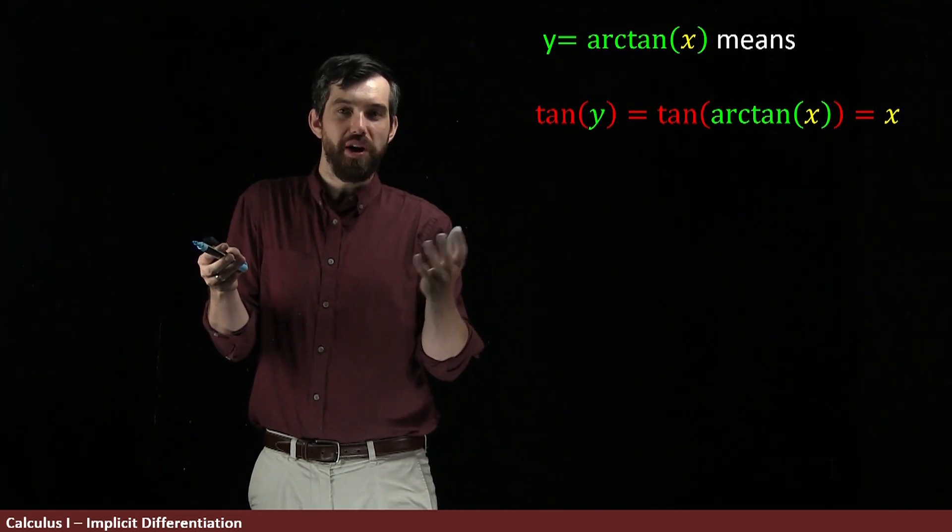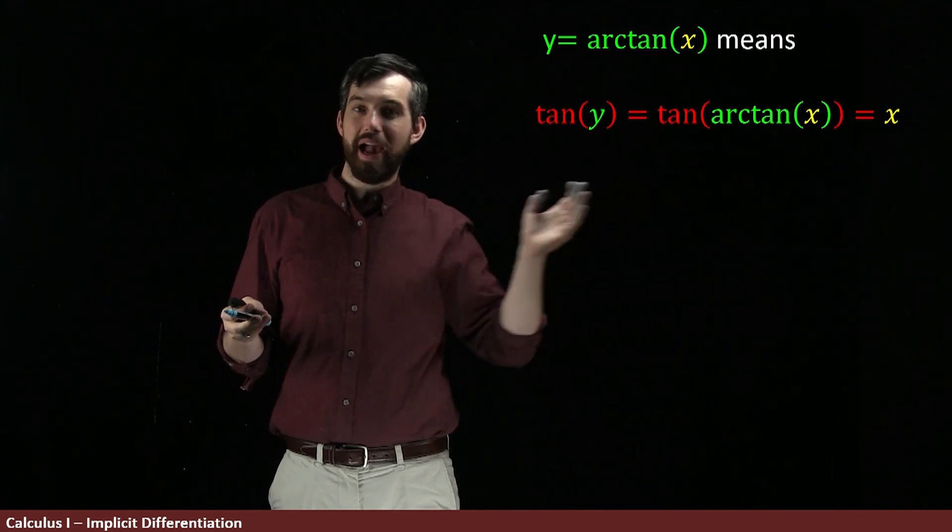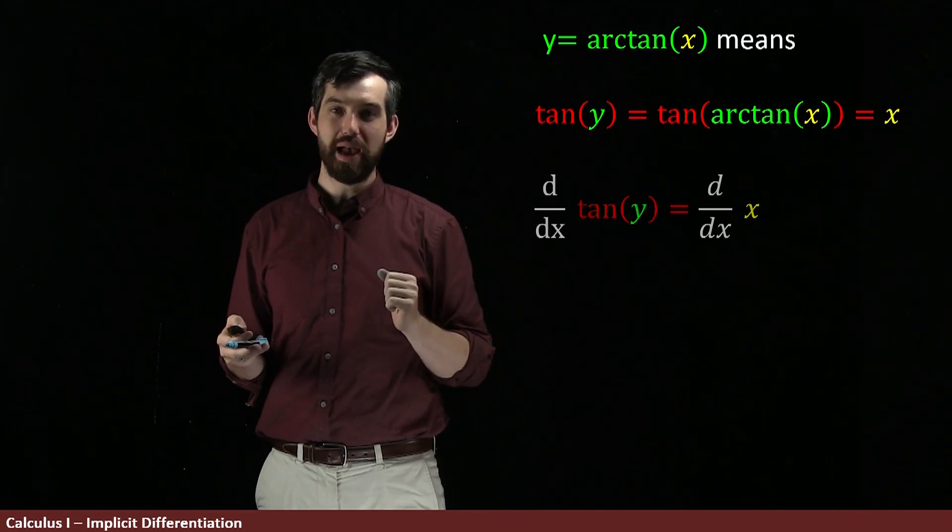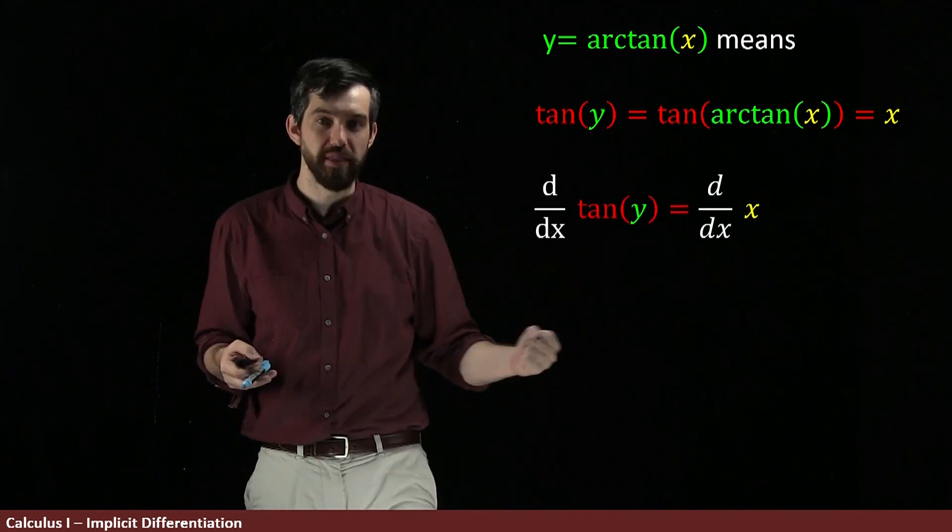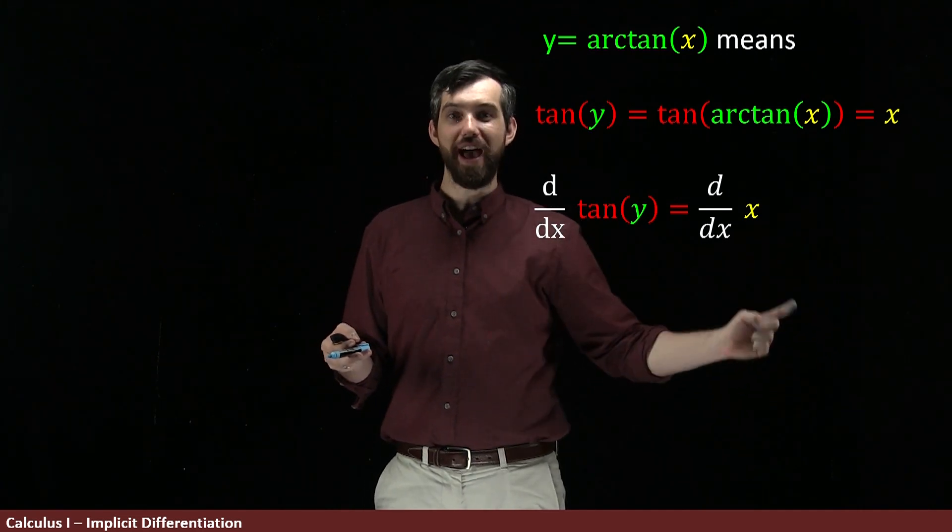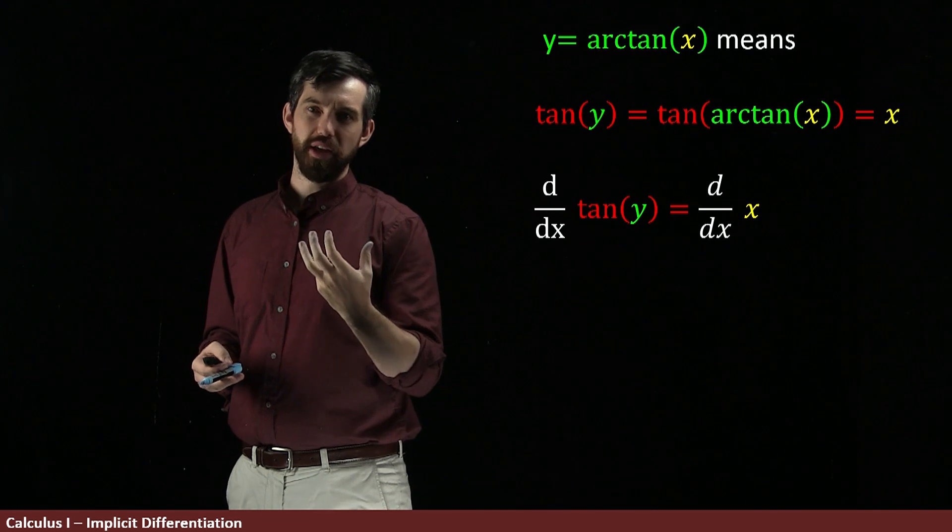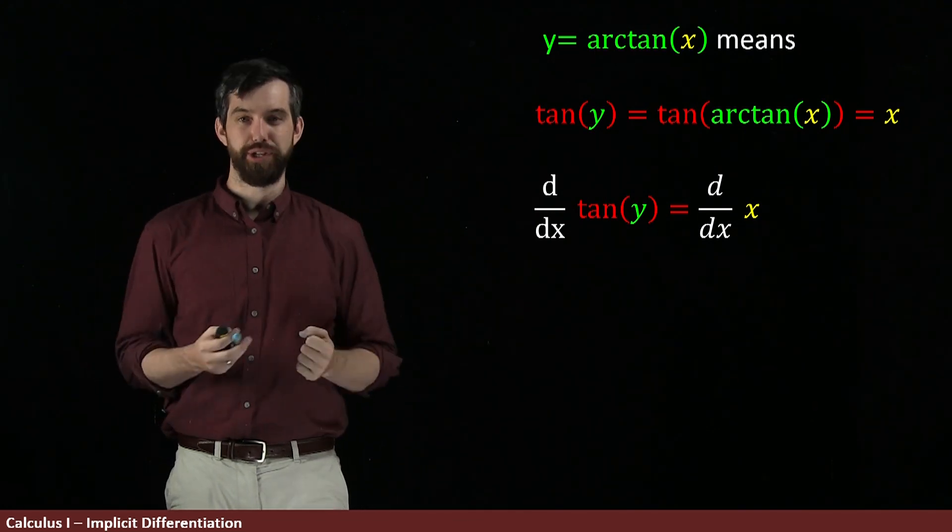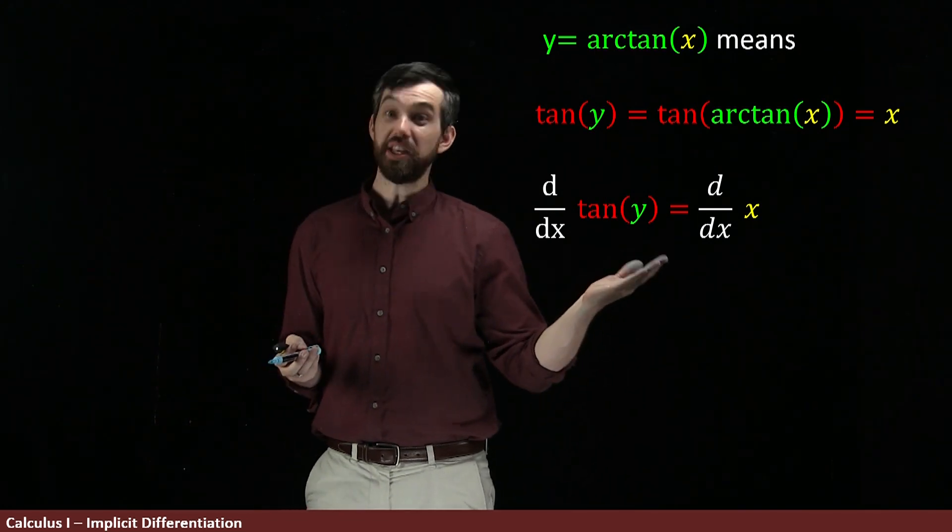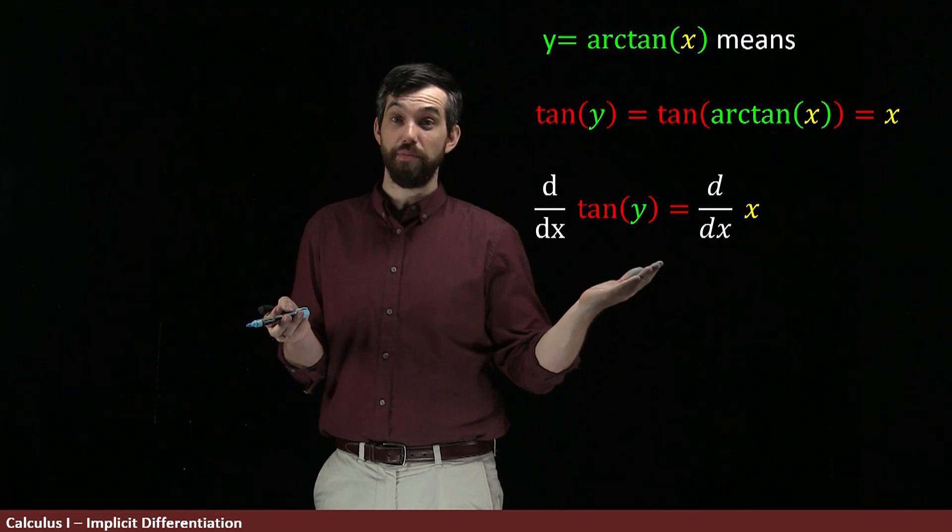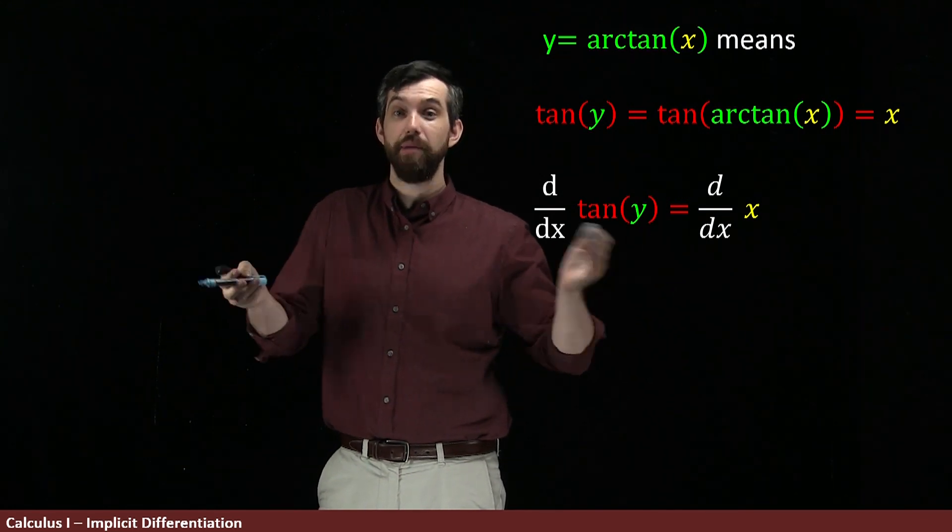So why don't I come along and take the derivative with respect to x of both sides? That is, I'm going to take the derivative with respect to x of tan of y and the derivative with respect to x just of x, ignoring now this middle term. Notice that we're going to be doing implicit differentiation. y here is some function of x and so I'm going to try to take its derivative implicitly.